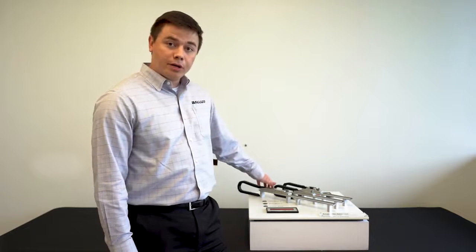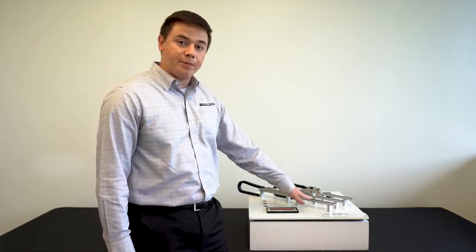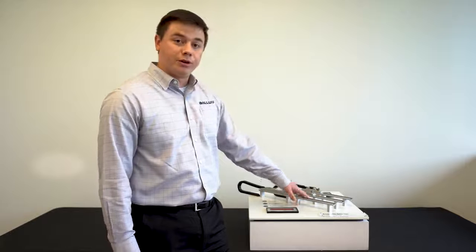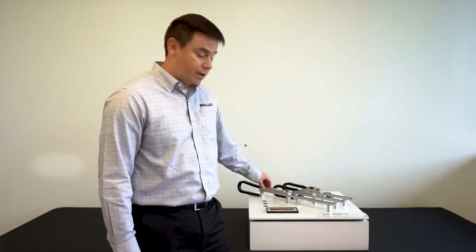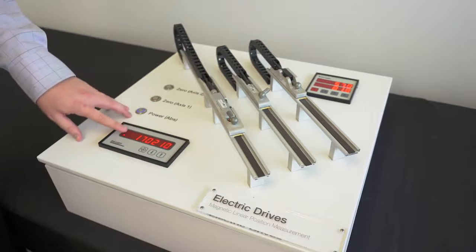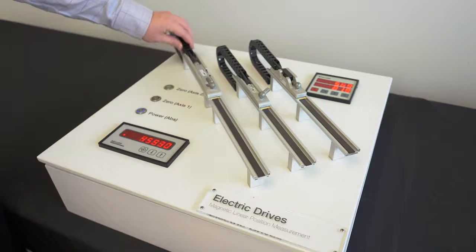Over here, we have our absolute encoder. One side of the tape is encoded with a specific code so the head can read exactly where it is. As you see, it goes out here, power gets cycled, and it still knows exactly where it is.